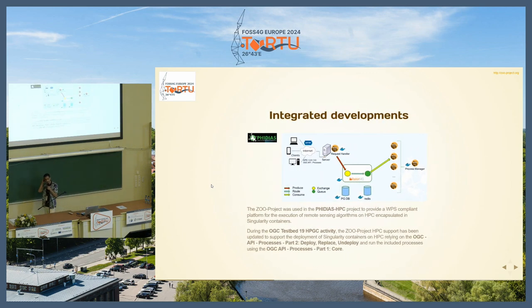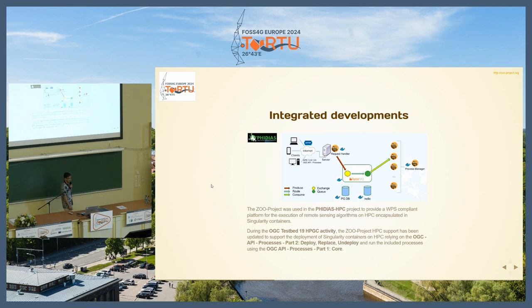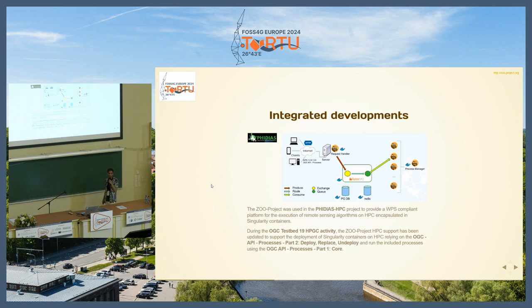We integrated work done in late 2015 where we now have two different kinds of zoo kernels: the main front zoo kernel taking requests, and the zoo kernel fast process manager which grabs asynchronous request messages and handles them, potentially on another machine. During the Testbed 19 HPGC activity, the zoo project was modified to reuse the Part 2 draft specification, being able to automatically deploy Singularity containers on HPC and then execute them using OGC API Processes Part 1 core.